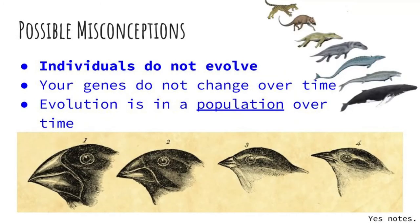A possible misconception about this is that the individual does not evolve. So an individual short-necked giraffe wouldn't spontaneously grow a long neck — it would just die. A longer-necked giraffe would have an advantage to survive. Your personal genes will not change over time, but if you are unable to reproduce because of some lack of fitness, the population would evolve without your genes. Evolution occurs in a population over time.